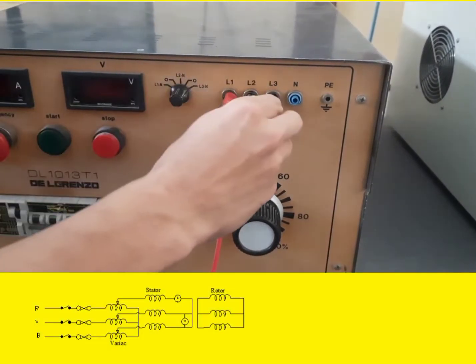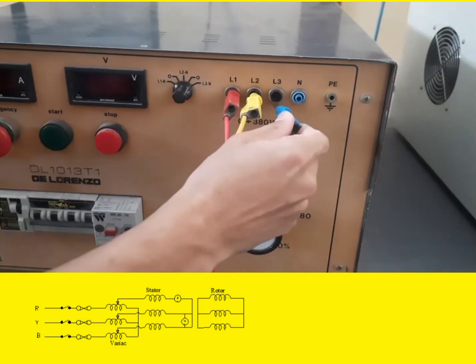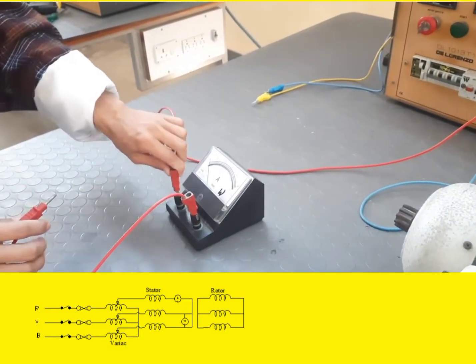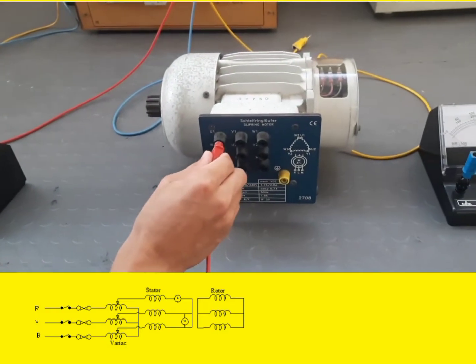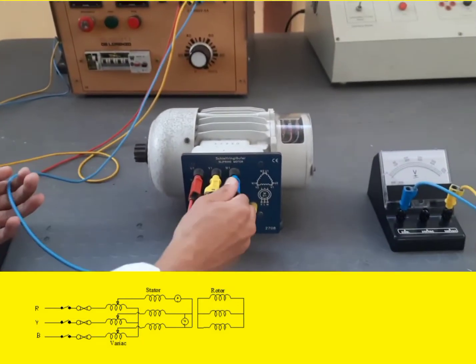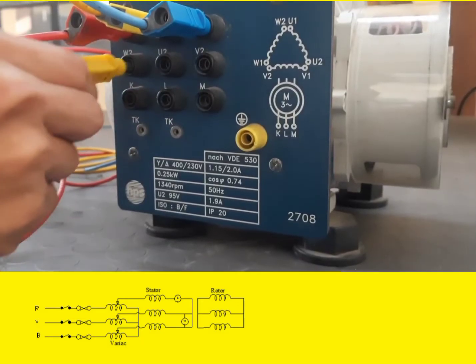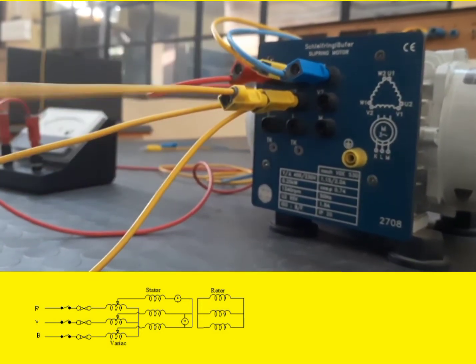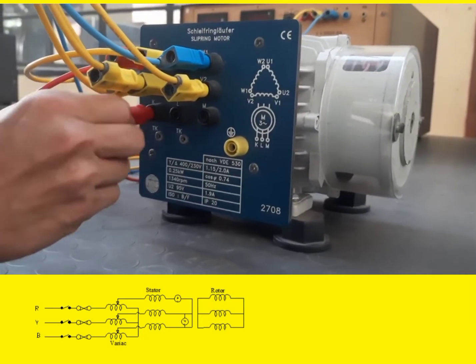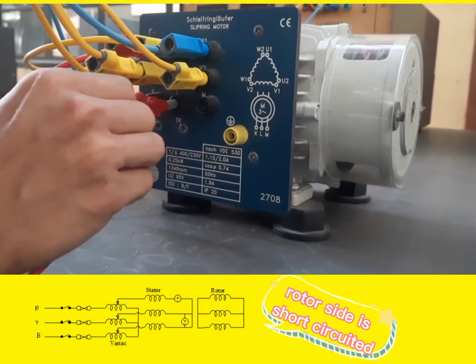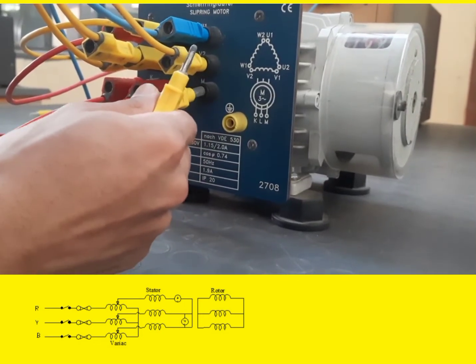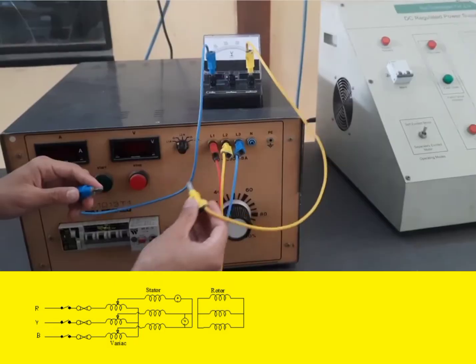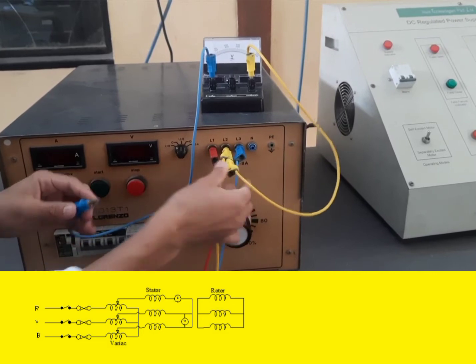We are supplying the power from the variable supply with the red, yellow and blue phases. Then we will connect it in series with the ammeter and then provide it to the stator side. Lastly, we are putting the voltmeter in parallel connection.